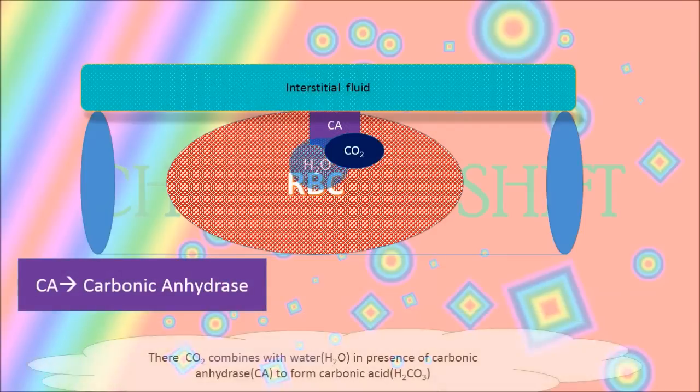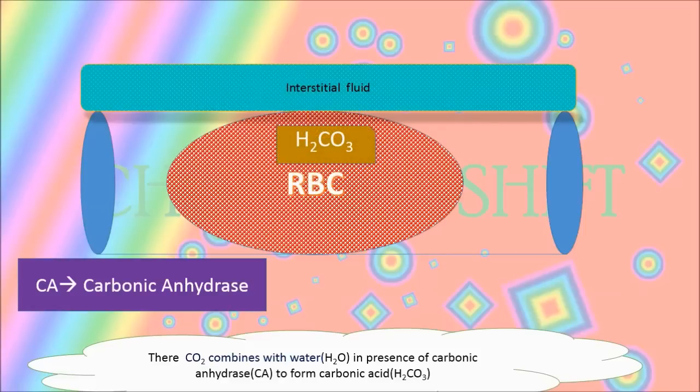In the RBC, CO2 combines with water (H2O) in the presence of carbonic anhydrase (CA) to form carbonic acid (H2CO3).